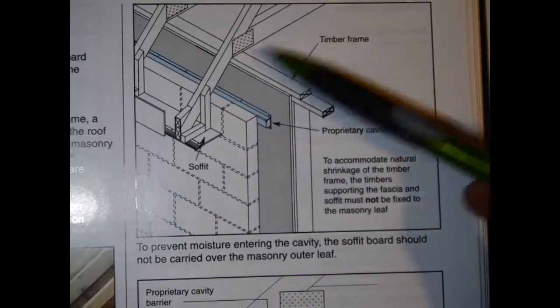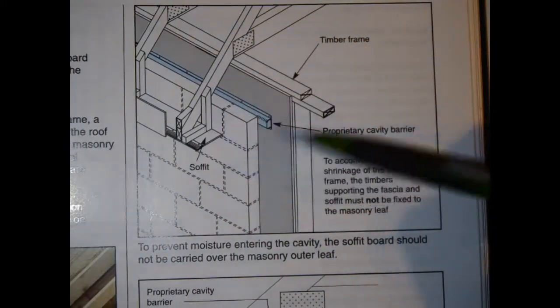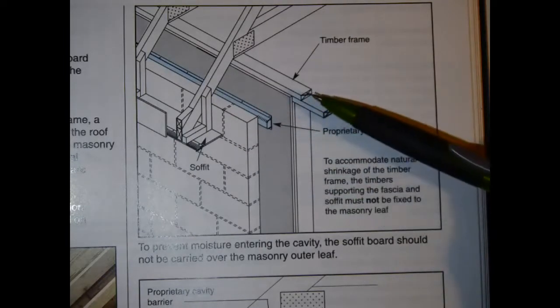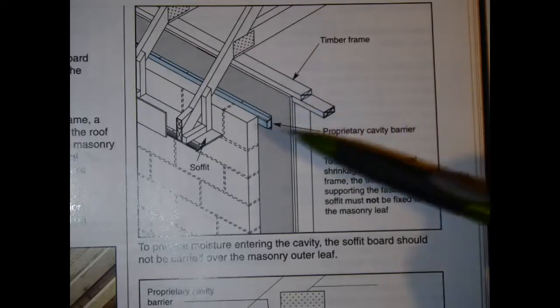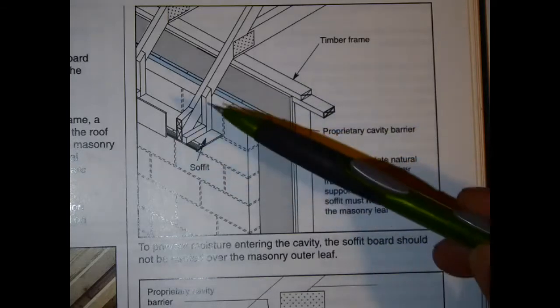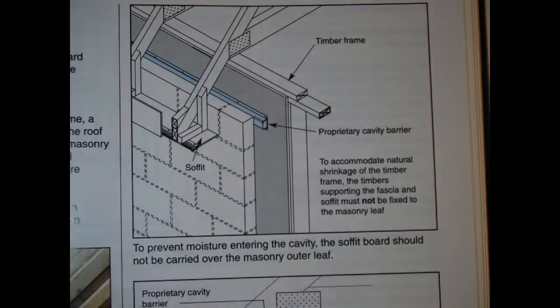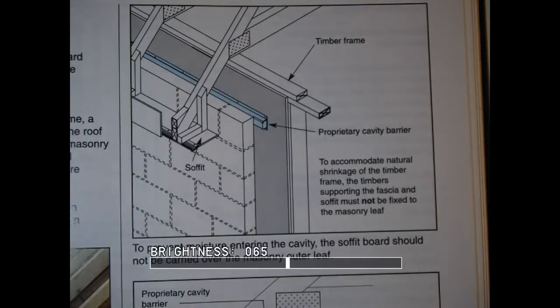You've got your header and binder at the top of the stud here, and you've got the support for the fascia and soffit here as well. Your vent can be seen fairly clearly in that there. So a nice detail showing what we are going to have a look at.